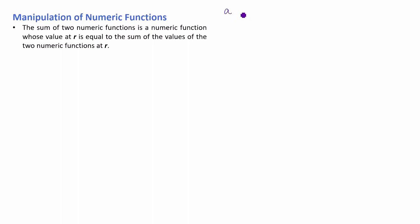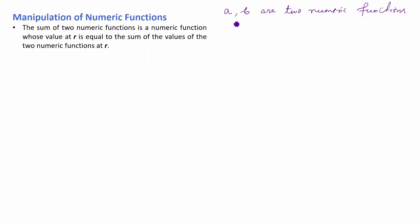Let's suppose a and b are two numeric functions. Then the sum of these two numeric functions is a numeric function whose value at r is equal to the sum of the values of the numeric functions at r. Let's suppose c is a numeric function which is the sum of a and b. Then c(r) is equal to a(r) plus b(r). That is very simple.